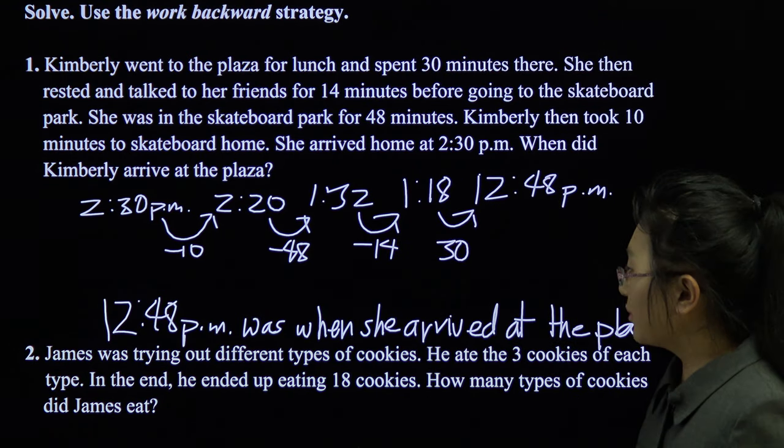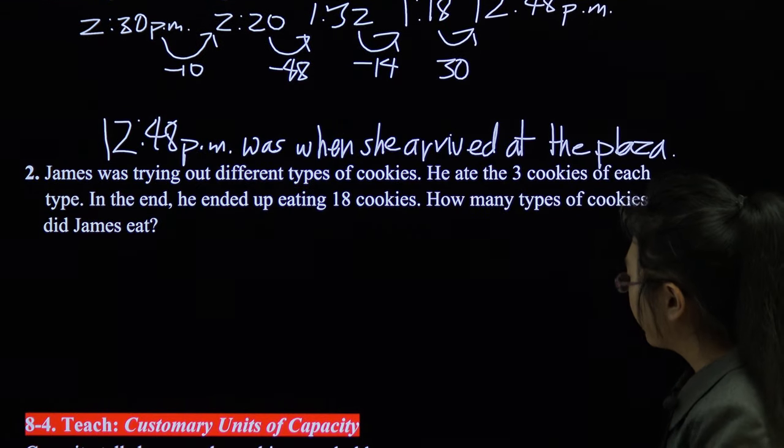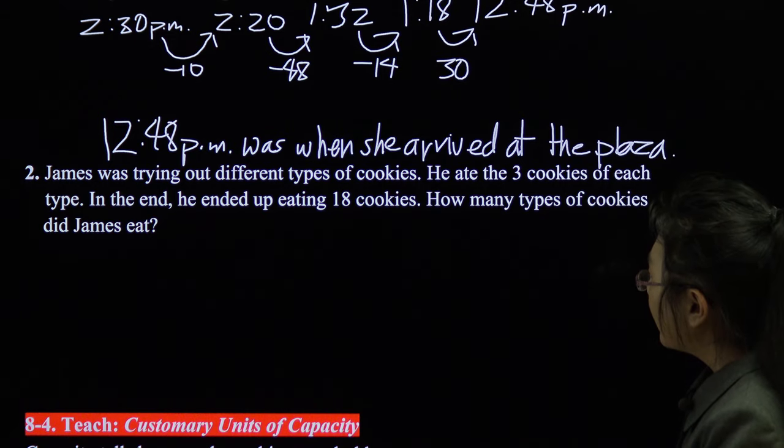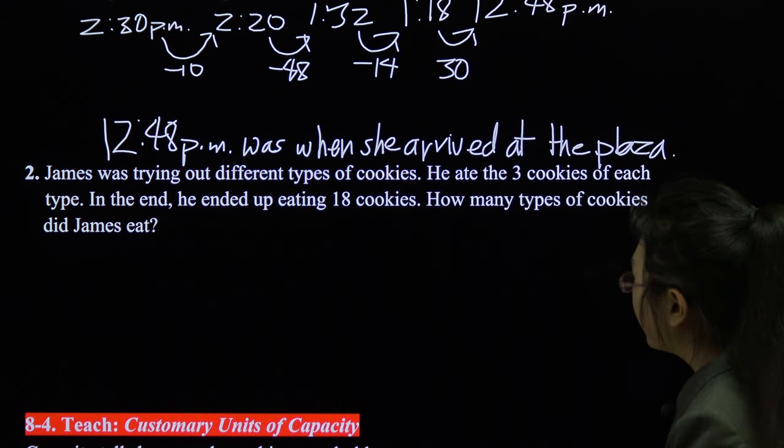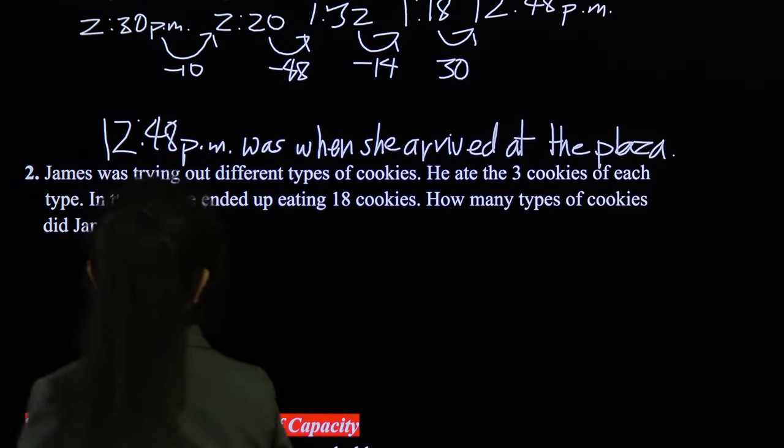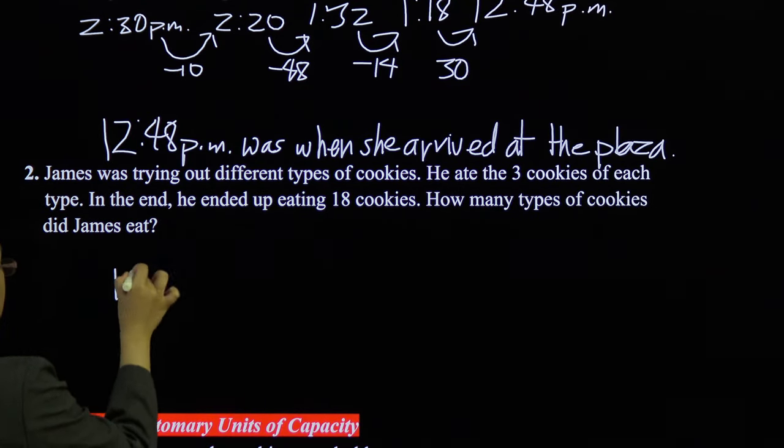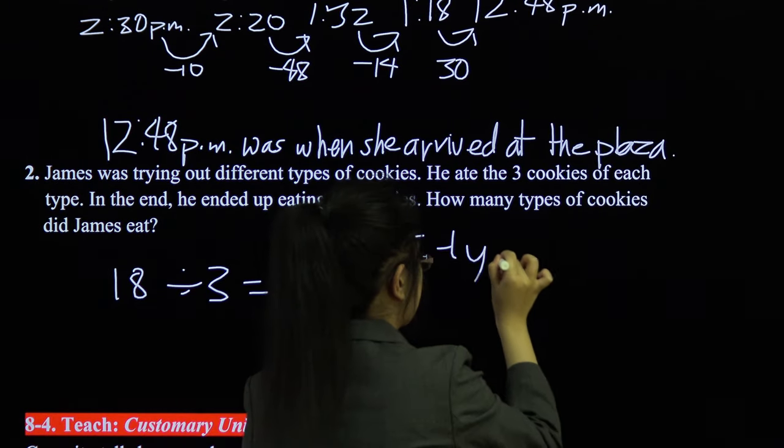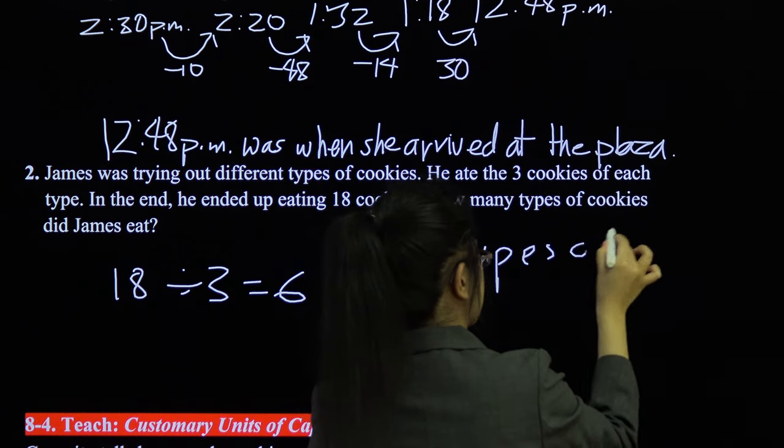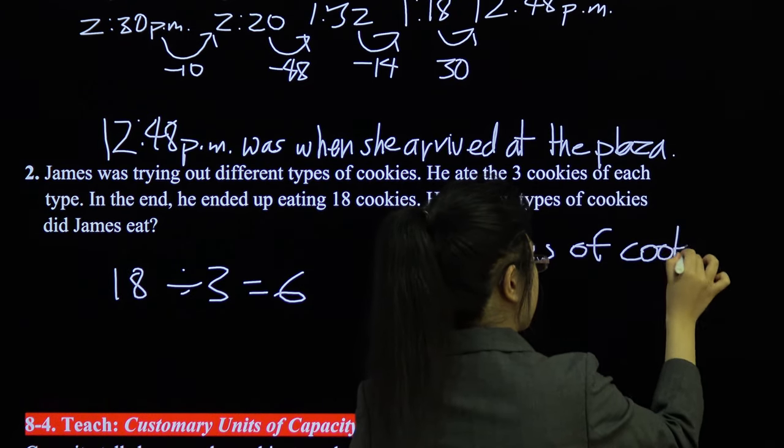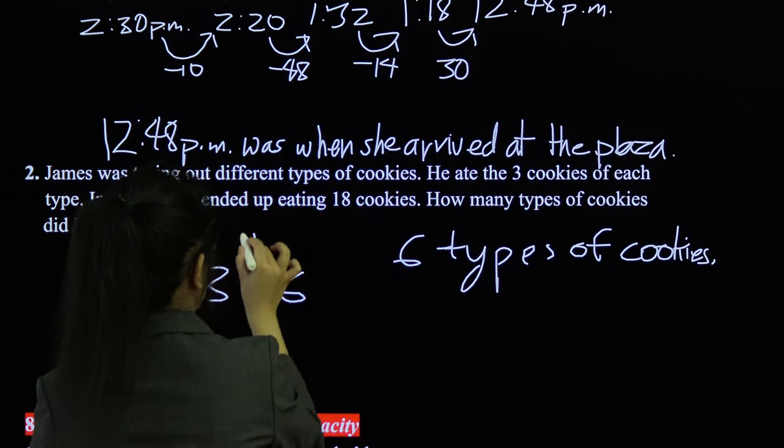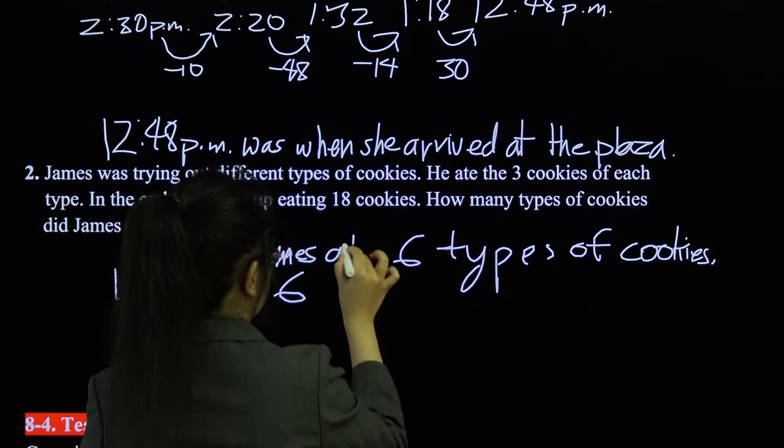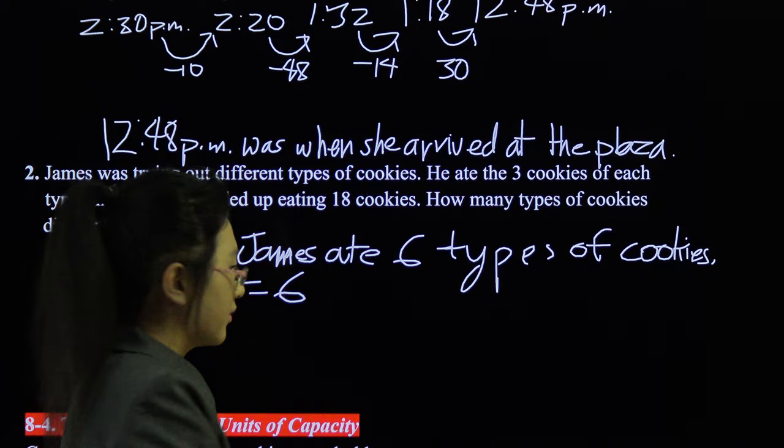James was trying out different types of cookies. He ate three cookies of each type. In the end, he ended up eating eighteen cookies. How many types of cookies did James eat? Well, it's three cookies of each type. And it's eighteen cookies total. So that's eighteen divided by three, which is six. Six types of cookies. James ate six types of cookies.